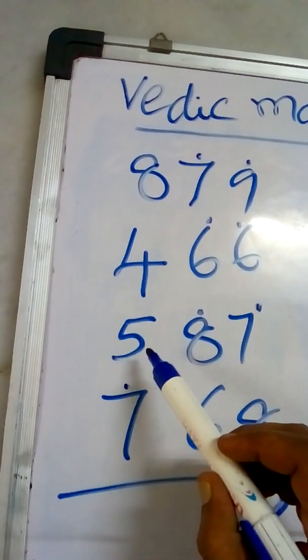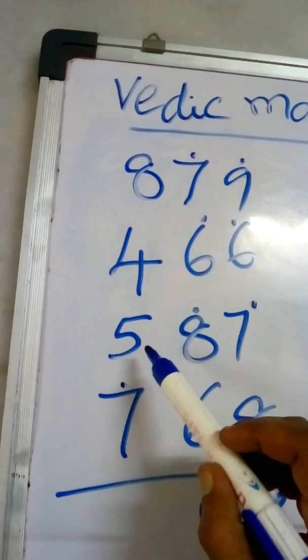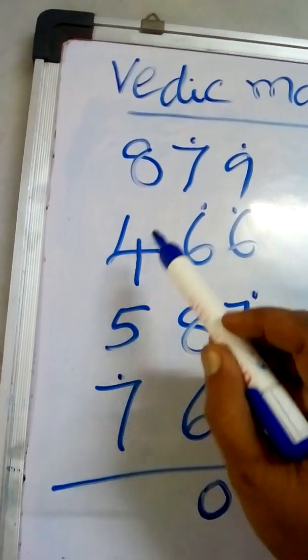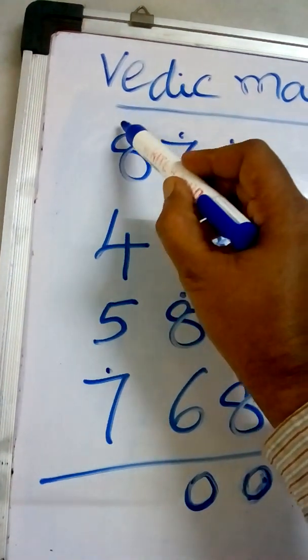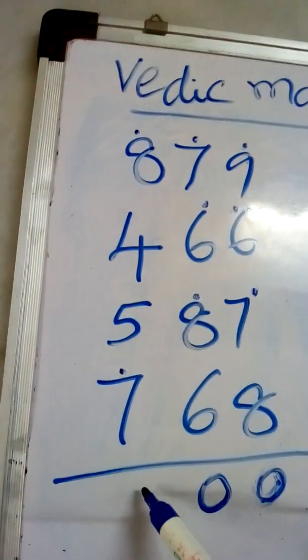And 5 plus 0 is equal to 5. Plus 4. 5 plus 4 is equal to 9. 9 plus 8 is equal to 17. Put 1 dot, 7 here.